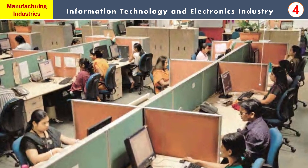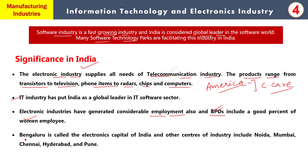काफी ज़्यादा महिलाएं भी BPOs में काम करती हैं। Karnataka की capital Bangalore नंबर वन पे है। जैसे Silicon Valley अमेरिका में software industry के लिए famous है, वैसे India में Bangalore को electronics capital कहा जाता है। और धीरे-धीरे industry फैल रही है - Noida, Mumbai, Chennai, Hyderabad जैसे बड़े-बड़े शहरों में। Pune में भी - जहाँ automobile industries का एक agglomeration develop हो रहा है।